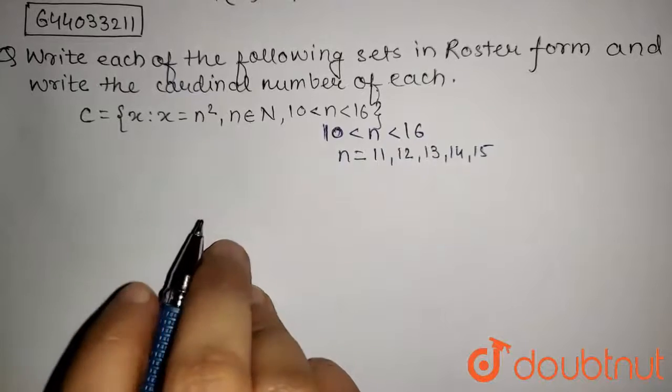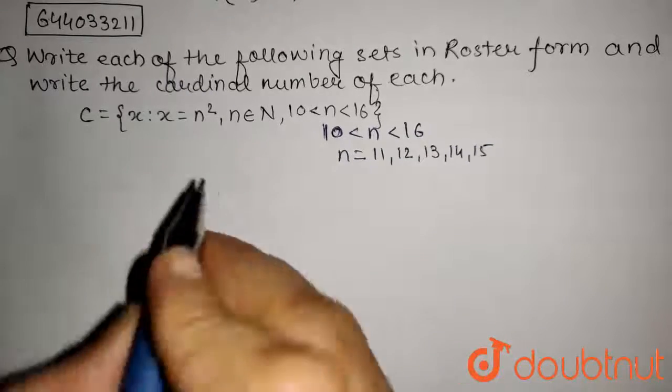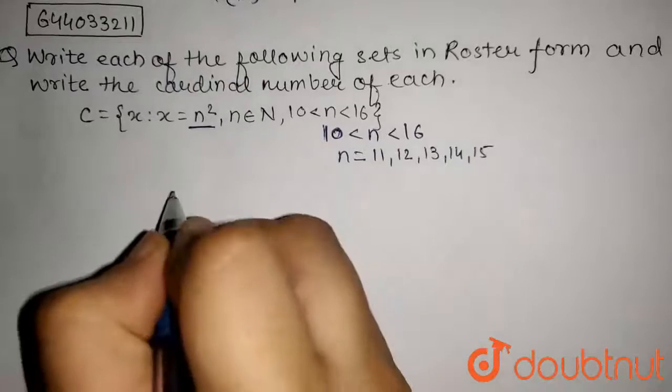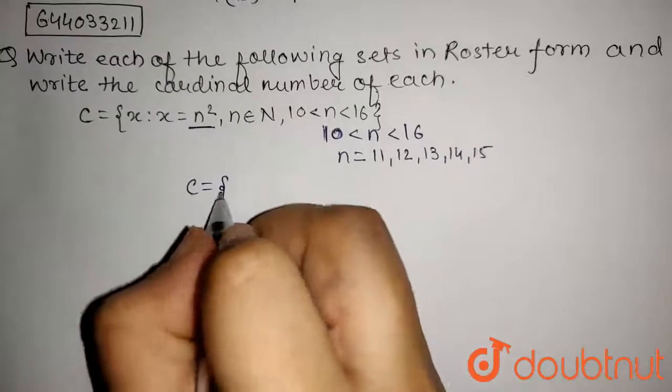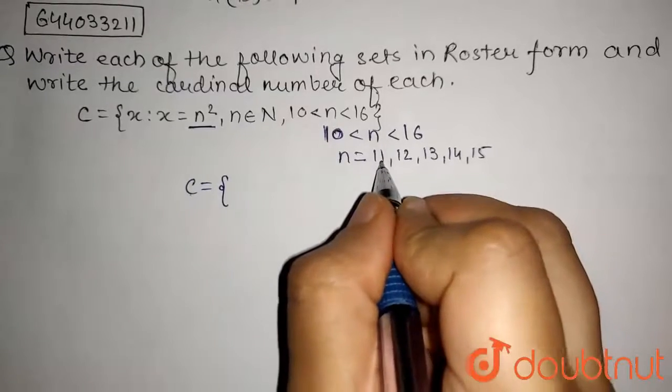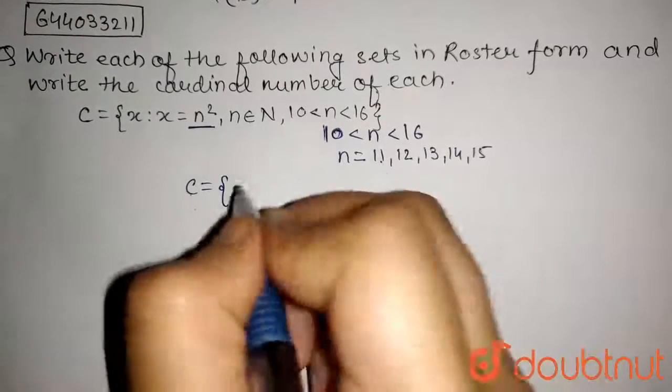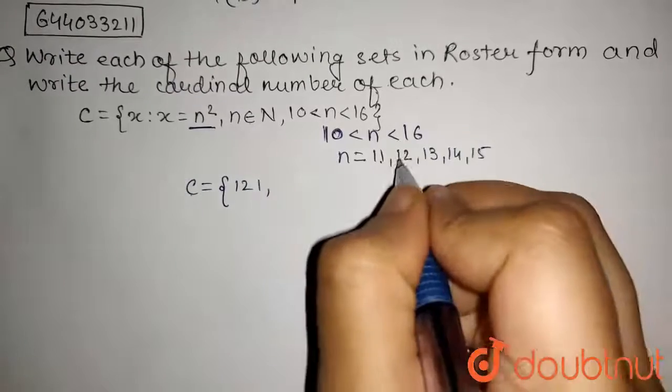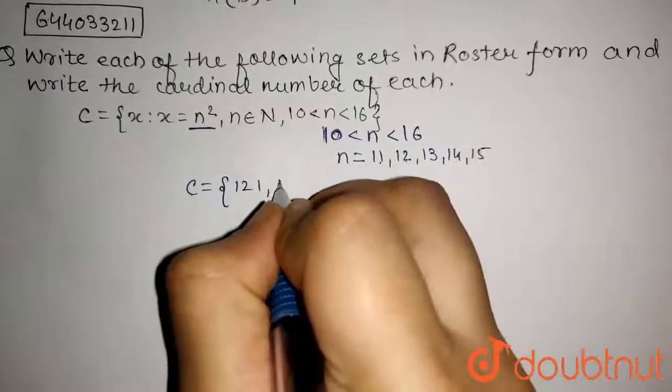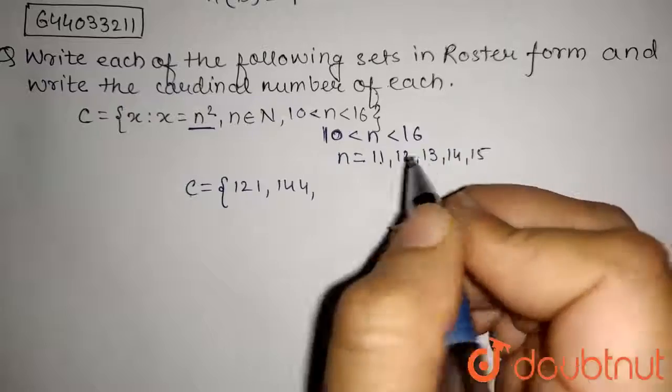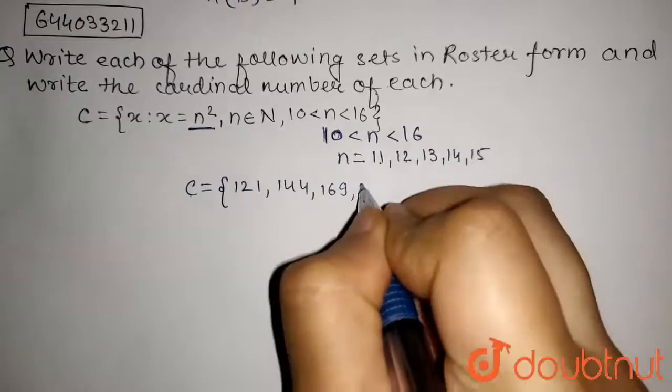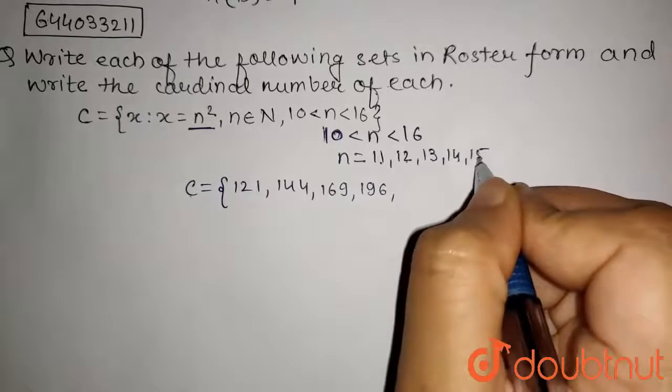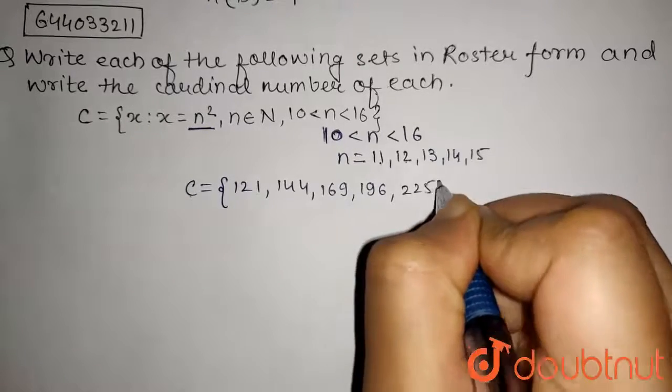Now the element will be n squared, so let's make the set. C equals 11 squared, that is 121, comma 12 squared, that is 144, comma 13 squared, that is 169, 14 squared, that is 196, and 15 squared, that is 225.